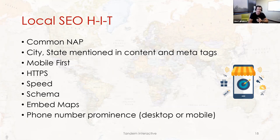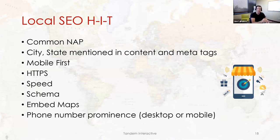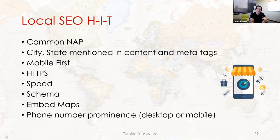HTTPS secure sites are not optional — they're necessary, 100%. Speed is very important. Schema is a way to code the website to give search engine bots more information about what content is on a page. Embedding Google Maps on your website is a good indicator. Phone number prominence is huge — one of the first things to look at when analyzing a website. If someone reaches your business on a phone and wants to call right now, they need to be able to tap that phone number easily.